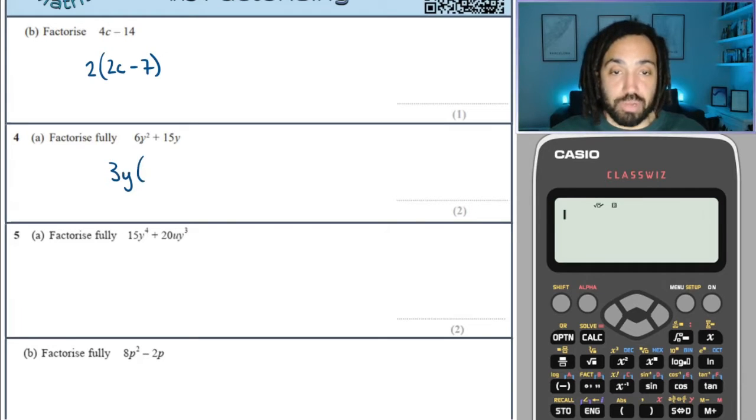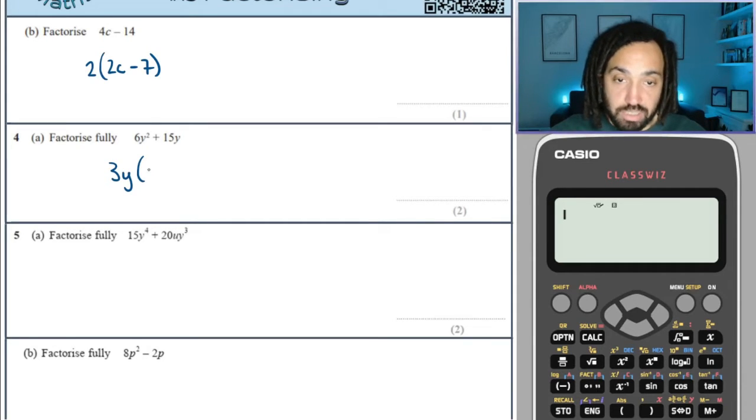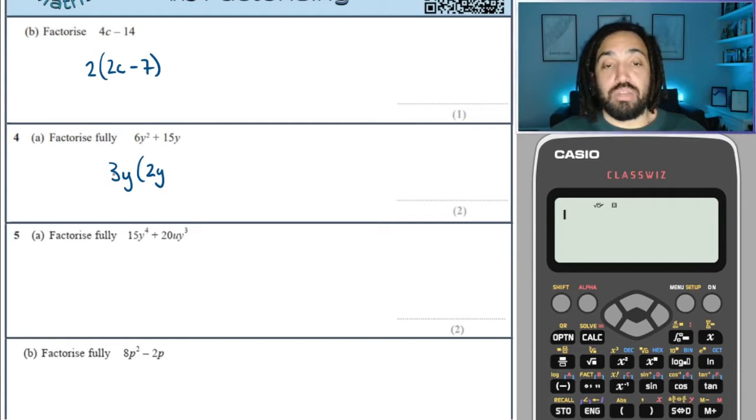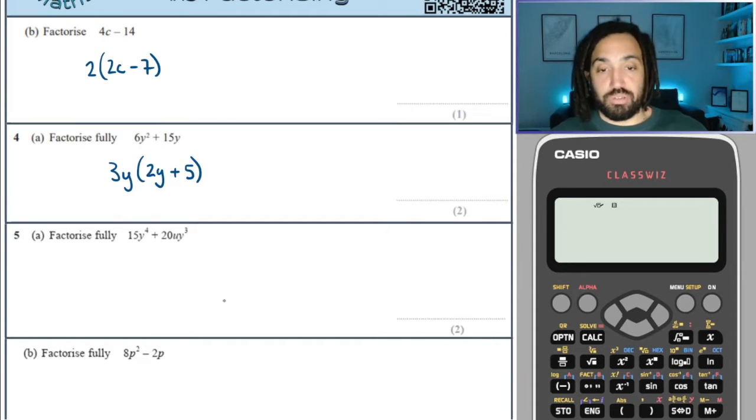What have I got at times 3Y by to make 6Y squared? Well a two to make six, and another Y to make Y squared. And what have I got at times 3Y by to make 15Y? That is plus five. Beautiful.